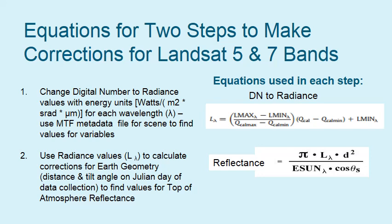These are the two equations and steps needed to correct Landsat 5 and 7 bands. Step one changes the digital number to radiance values, and you have to do it for each of the wavelengths you want to use in your study. The variables for this equation are in the metadata file for each scene. When you download your data, you will get an MTL file — make sure you save that. You can open it in WordPad and view the variable values for this equation.